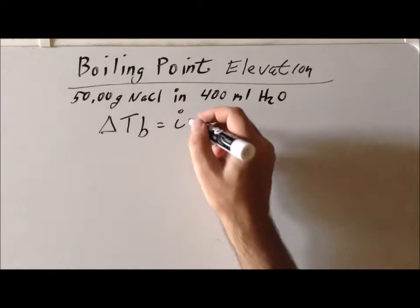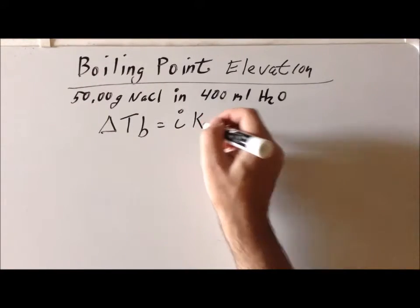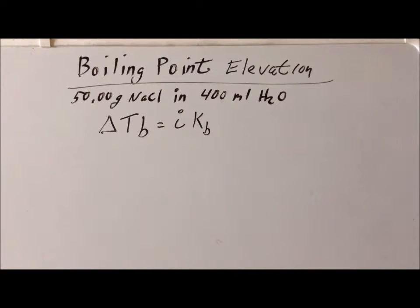We have Kb, which is the boiling point elevation constant, sometimes called the ebuloscopic constant. And then m is the molality of the solution. So let's go in reverse order, and we're going to determine the molality of this solution first.